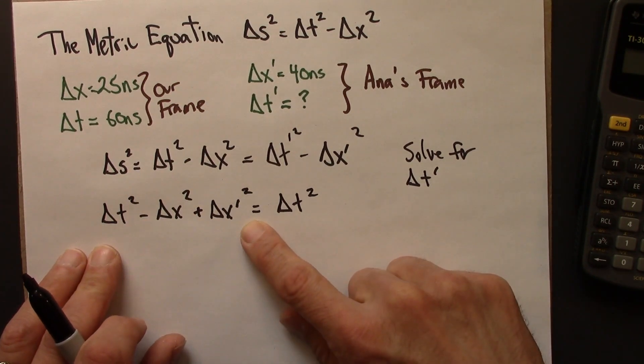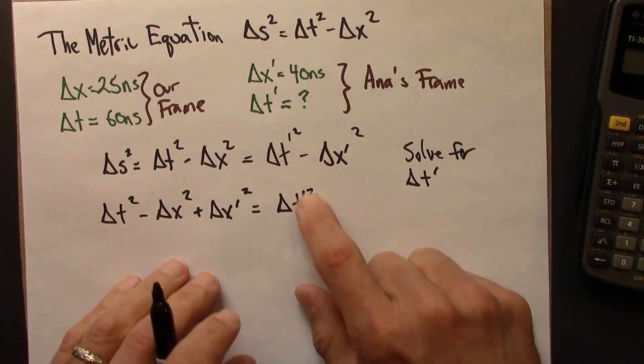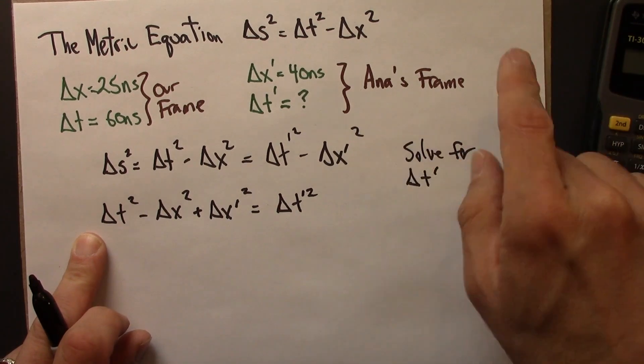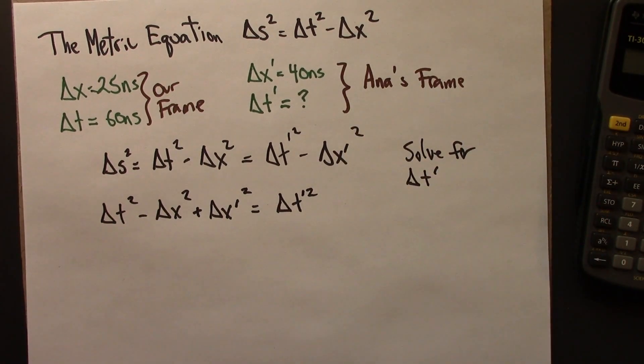So let's see, I could plug in numbers now, and then take the square root. Oh sorry, this is delta t prime from there, delta t prime. Let's plug in numbers, and then I can take the square root, and we'll see what happens.